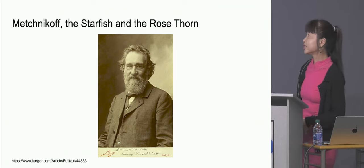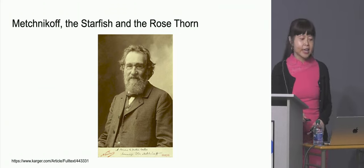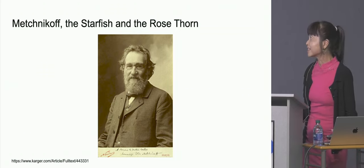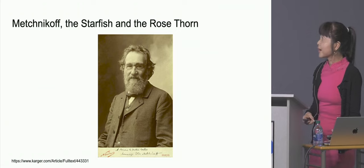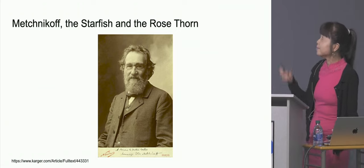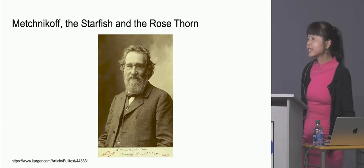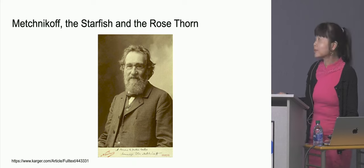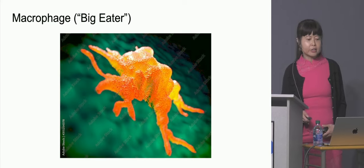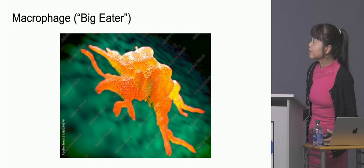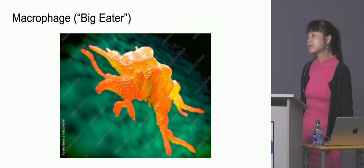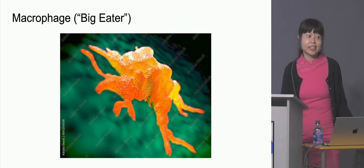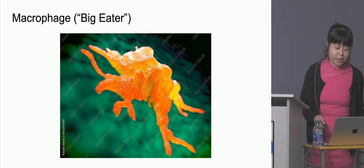You can't talk about macrophages and not reference this guy. He's Eli Mechnikoff, and he's famous because the myth is that he was looking under the microscope at a starfish that had been impaled by a rose thorn, and he saw these creatures that were swimming around and seemed to be gobbling things up. As a result, he named them macrophages, which comes from the Greek for 'big eater.' So if you think of them as big gobblers, that's a good idea of at least one of their general functions.